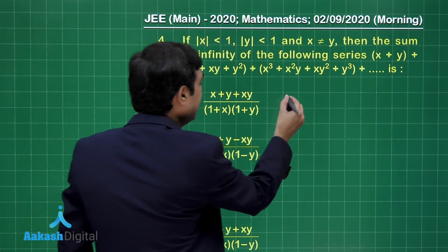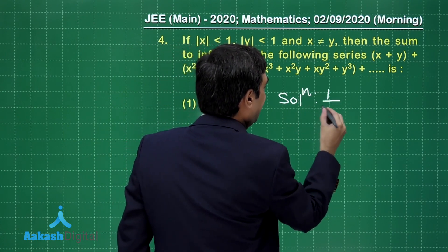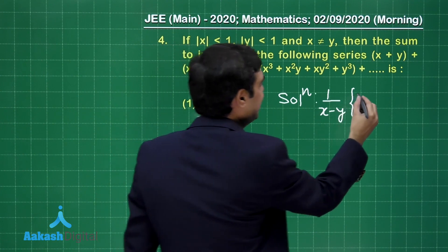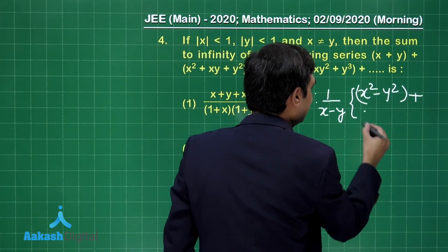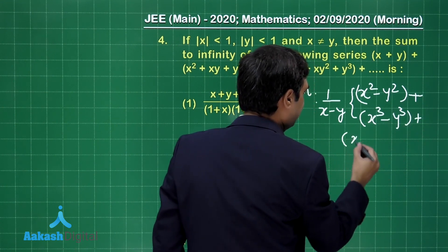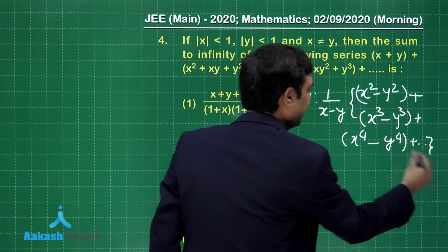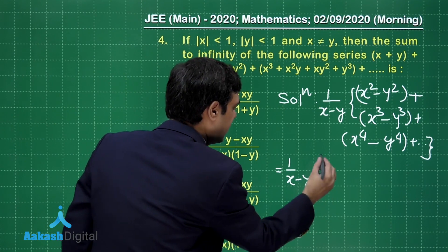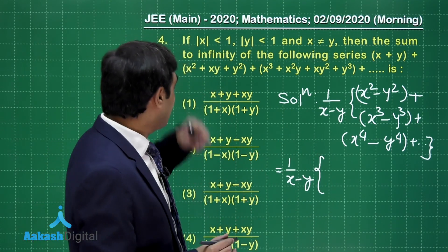This is a simple one. We multiply and divide by (x minus y), so the series changes to (x² minus y²) plus (x³ minus y³) plus (x⁴ minus y⁴) plus ... and so on to infinity. This becomes one upon (x minus y), multiplied by two infinite GPs.